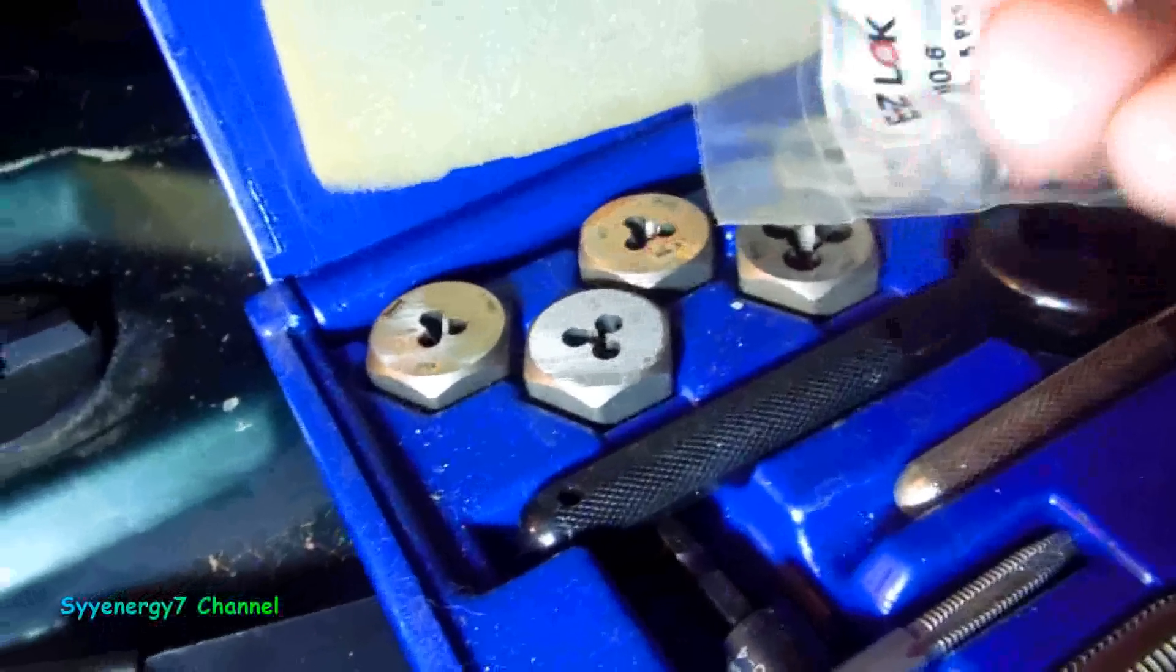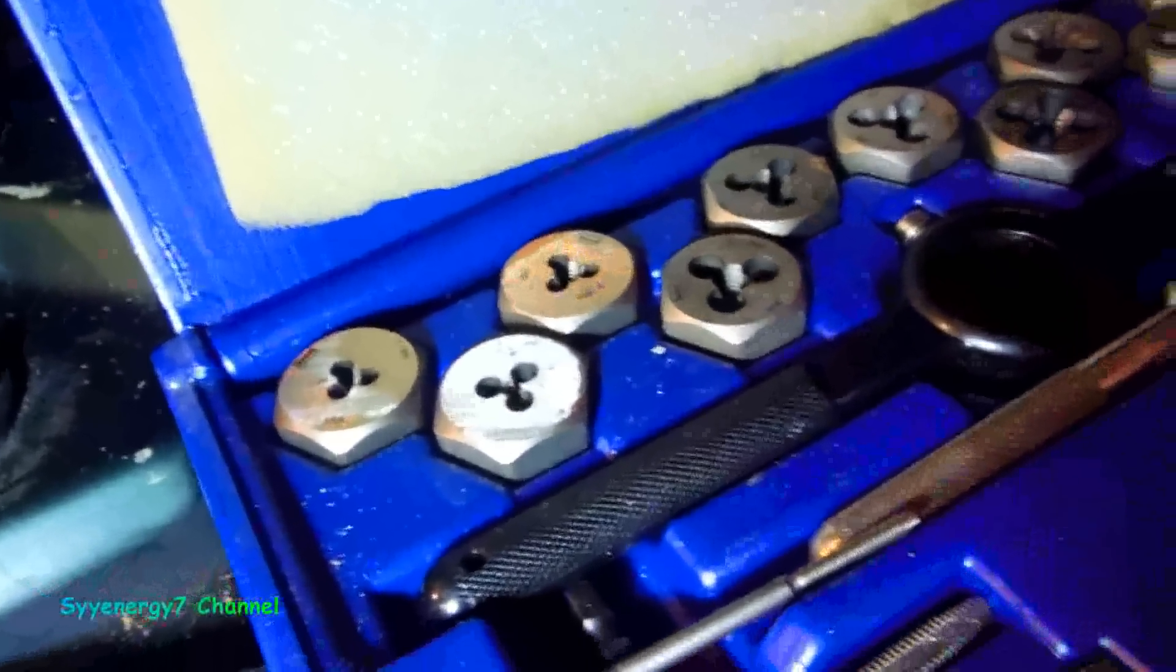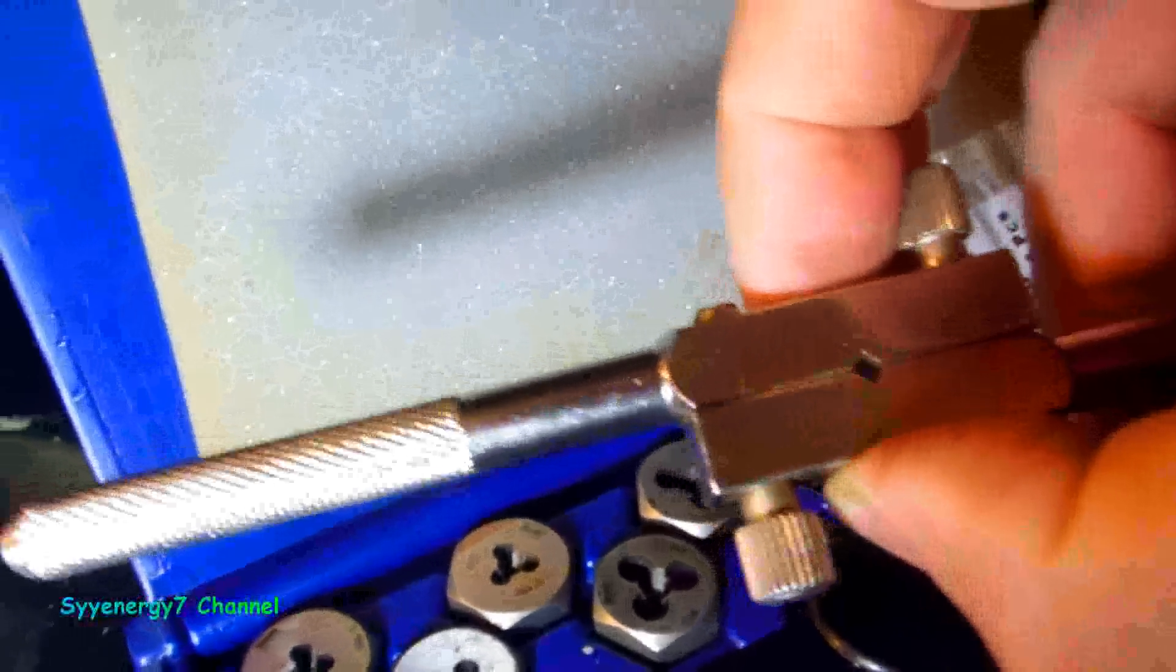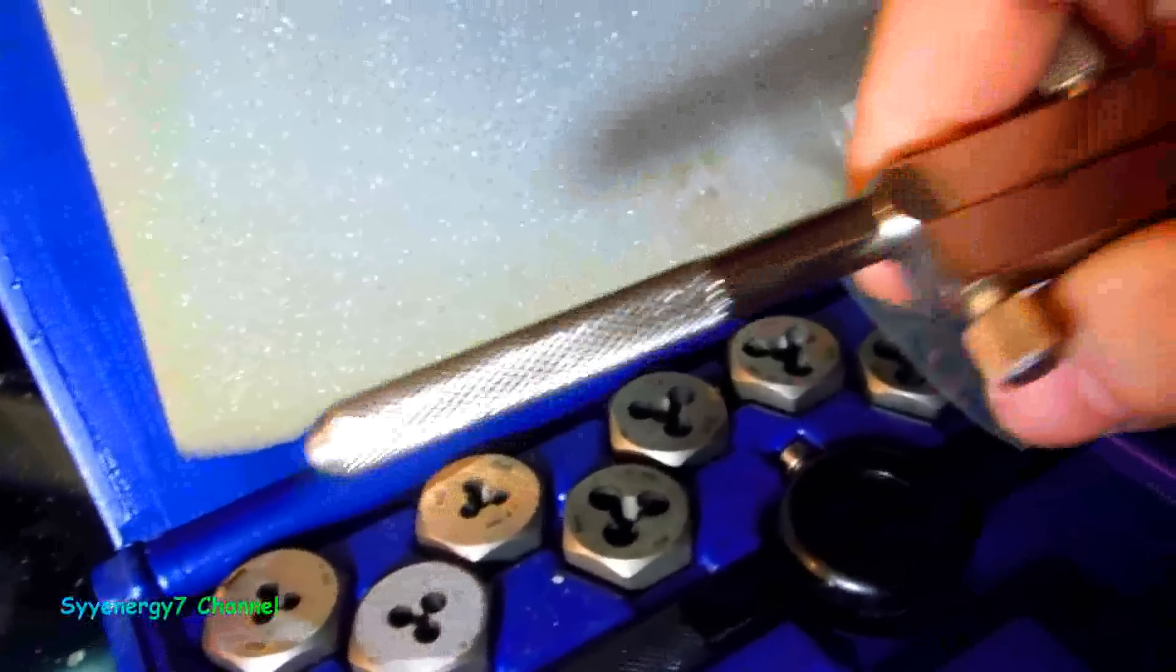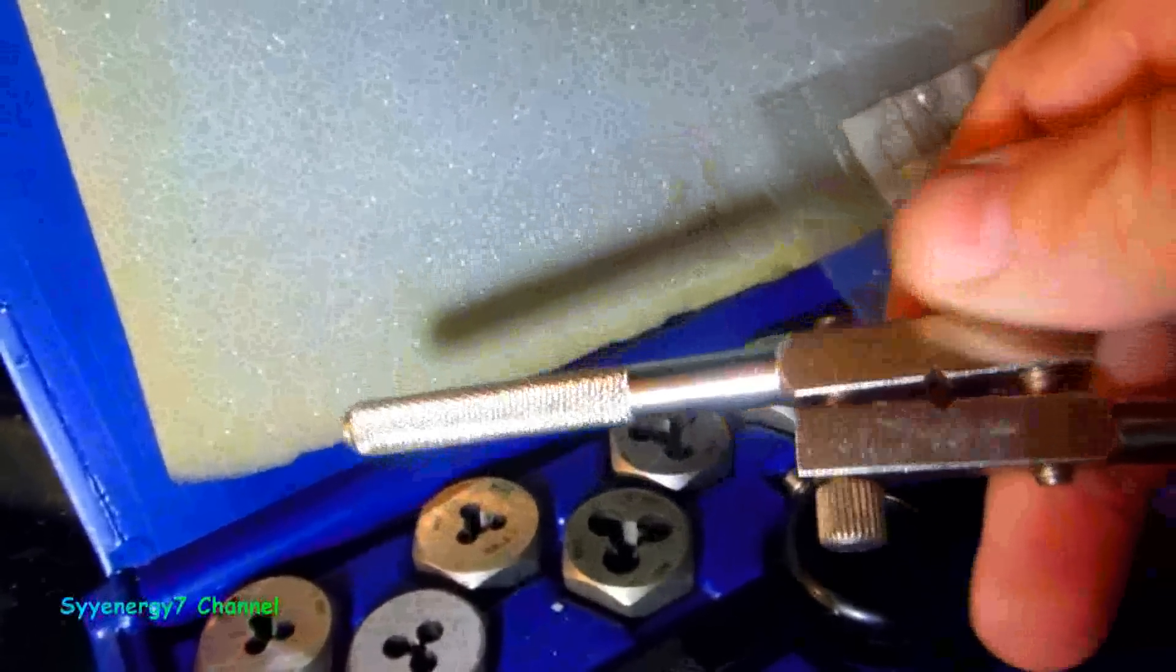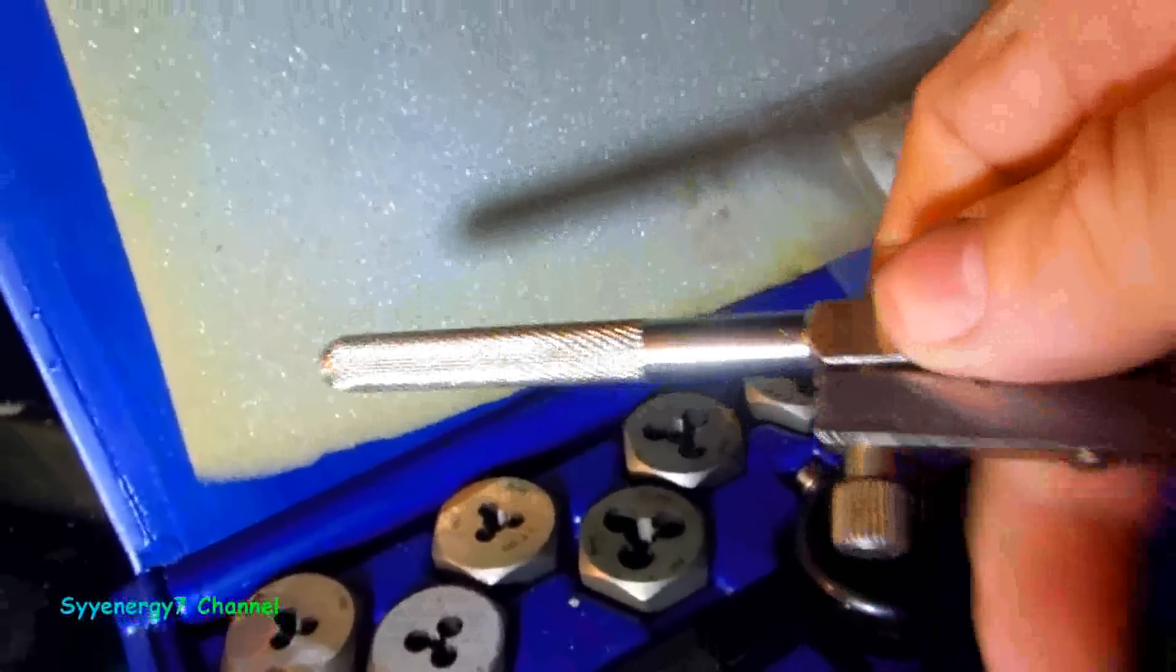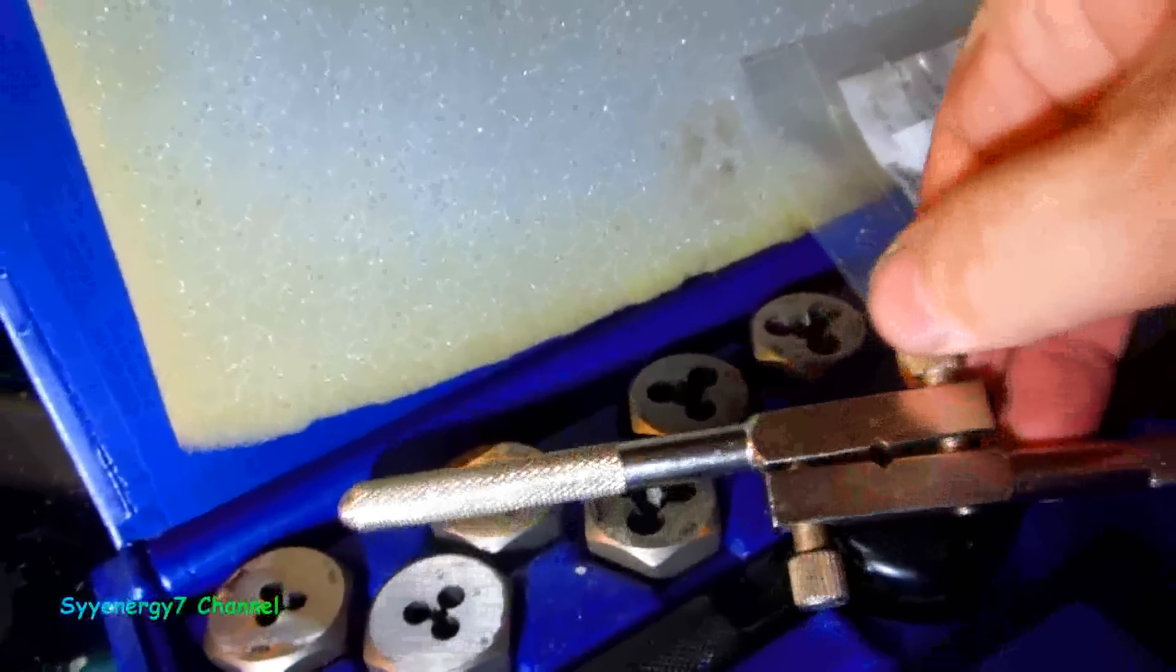You want to have a full tap and die set with the right handle. A lot of times people just get these dies and try to use a handle that doesn't have the right type. You can use vice grips if you're real careful.